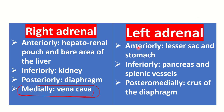In the case of the left adrenal gland, anteriorly it is related to the lesser sac and the stomach, inferiorly to the pancreas and splenic vessels, and also the kidney. Posteriorly and medially it is related to the crus of the diaphragm. The most important relation overall is the right adrenal gland's relationship to the inferior vena cava.